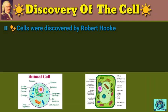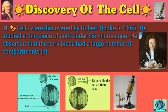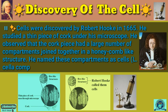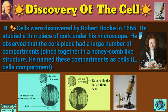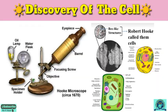Cells were discovered by Robert Hooke in 1665. He studied a thin piece of cork under his microscope and observed that the cork piece had a large number of compartments joined together in a honeycomb-like structure. He named these compartments 'cells' — from the Latin word 'cella,' meaning compartment. This is how the cell was discovered.